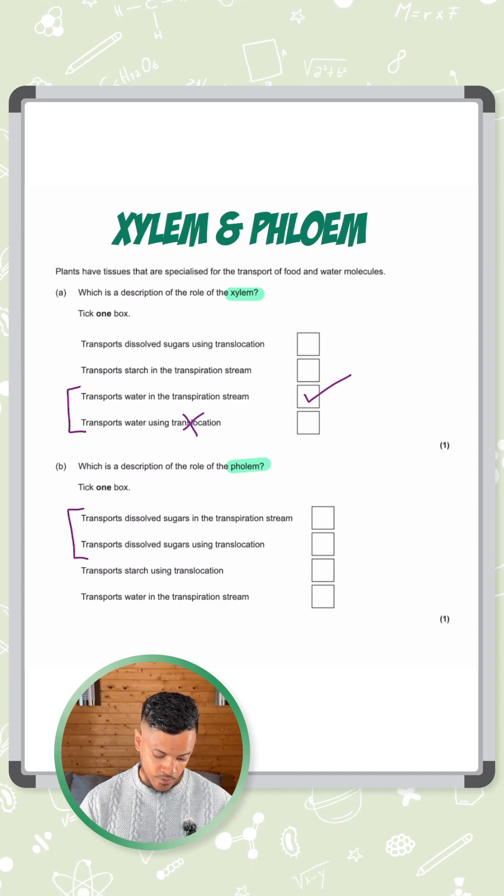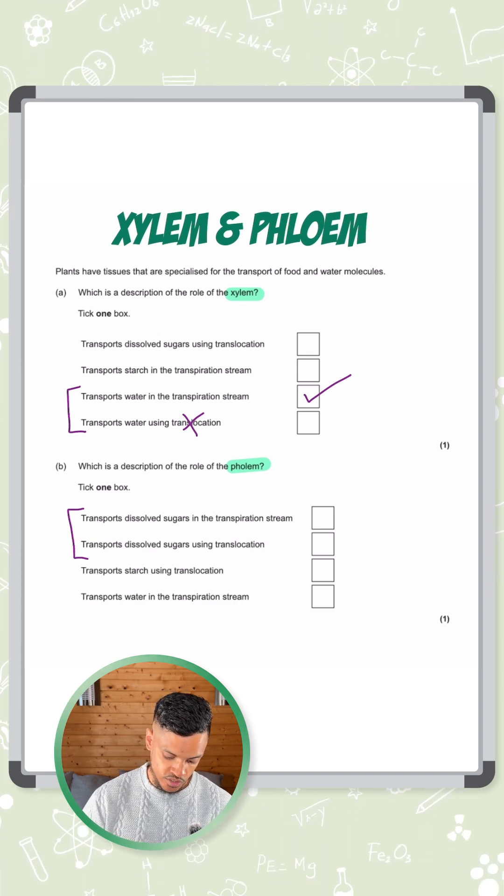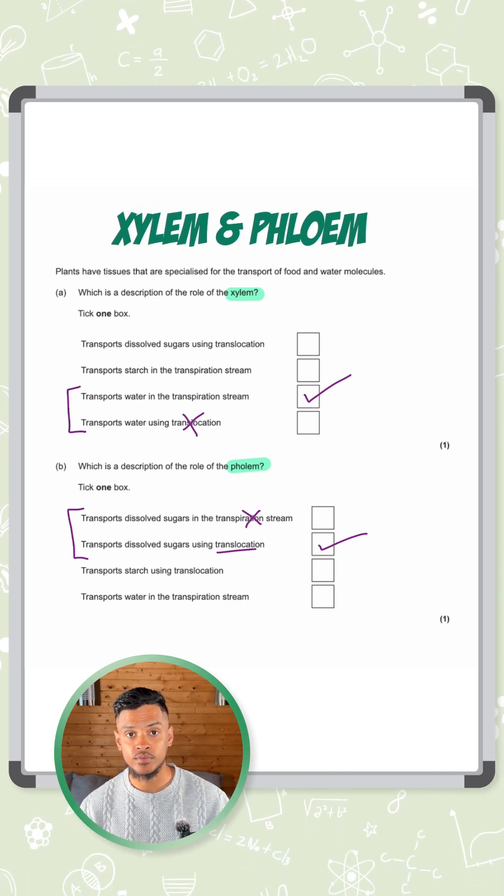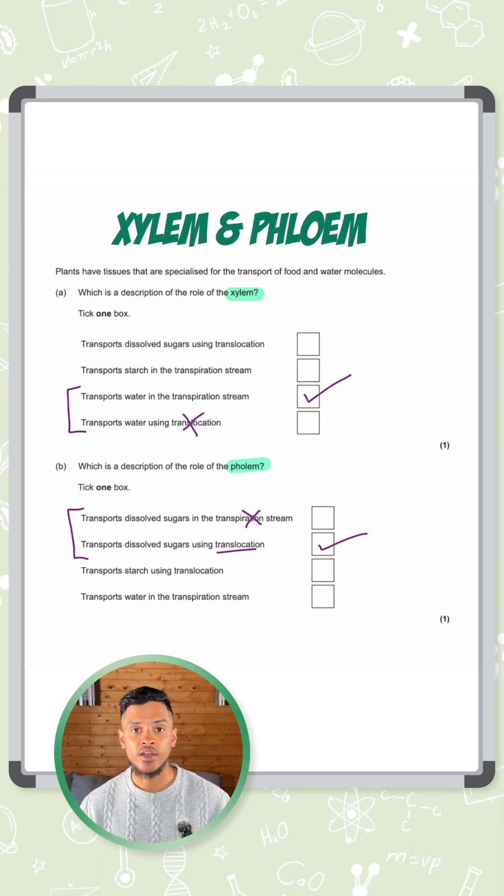For part B therefore, transports dissolved sugars using translocation, not the transpiration stream because that's for the movement of water. That's how you get two marks there.